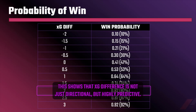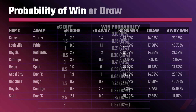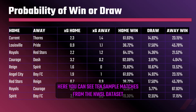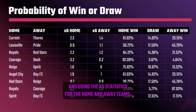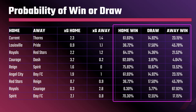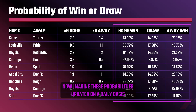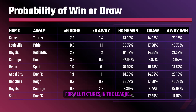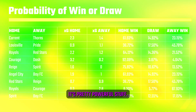This shows that XG difference is not just directional, but highly predictive. Here you can see 10 sample matches from the NWSL dataset, and using the XG statistics for the home and away teams, we've calculated the win and draw probabilities for each team. Imagine these probabilities updated on a daily basis for all fixtures in the league — it's pretty powerful stuff.